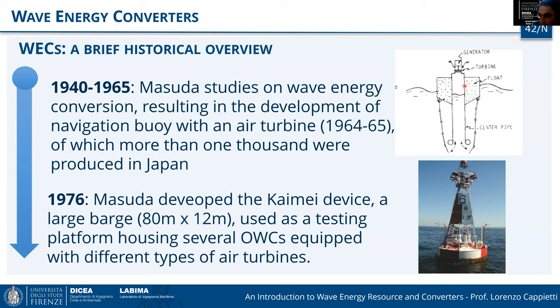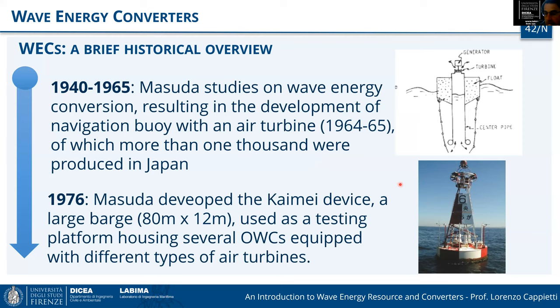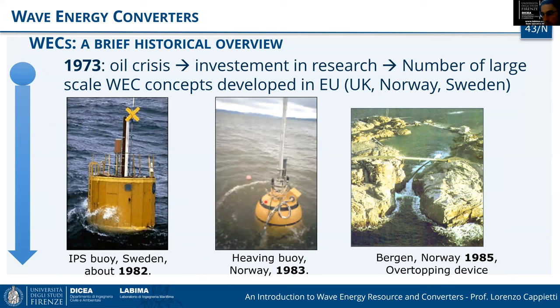Masuda's device is today called the oscillating water column. It is a floating body with a column inside. As the body goes up and down, it creates pressure variation in an air pocket above the internal free surface level. This pressure variation creates an air flux through a turbine, which drives a generator and produces electrical energy. This 1965 technology was proven effective, and since 1976 Masuda continued developing it — though no significant changes have appeared in recent years.